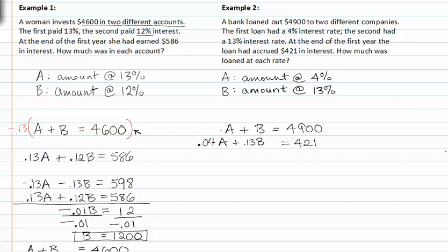If I multiply the first equation by negative 0.04, my A's will drop out. This will give me negative 0.04A minus 0.04B is equal to negative 196. The second equation remains the same.